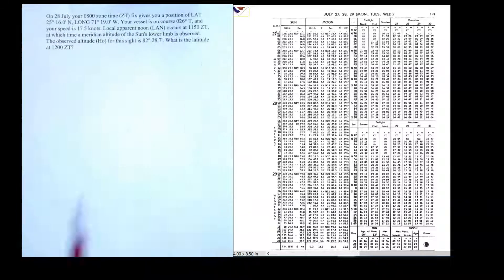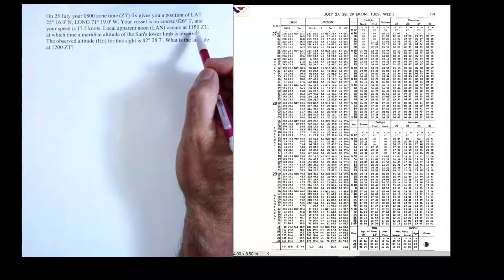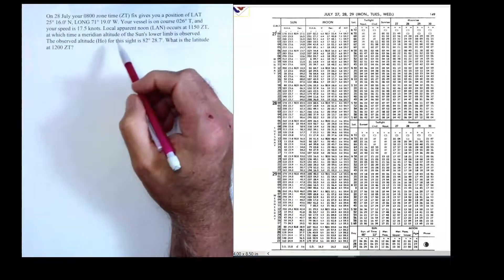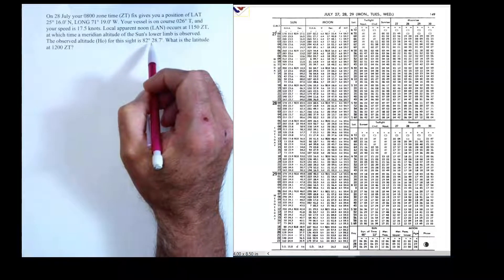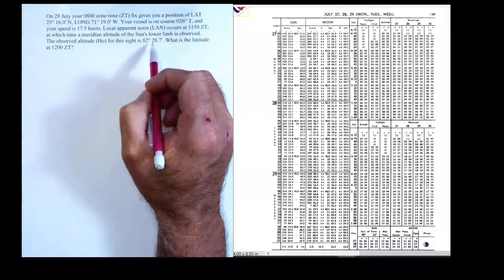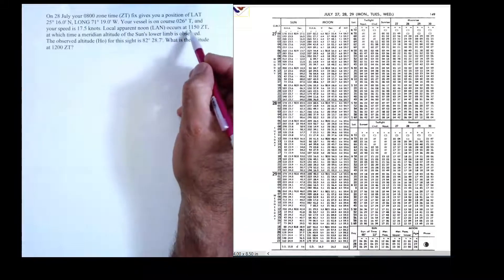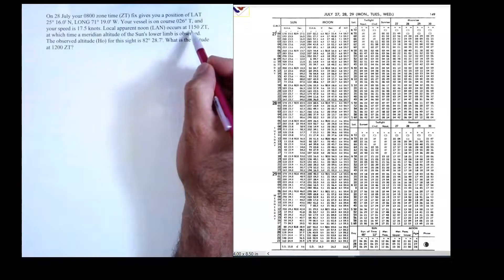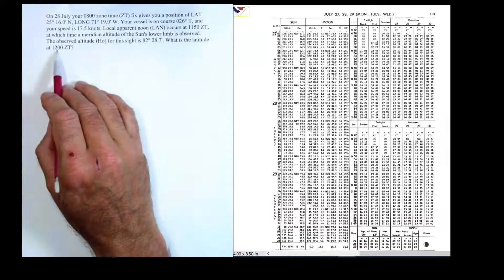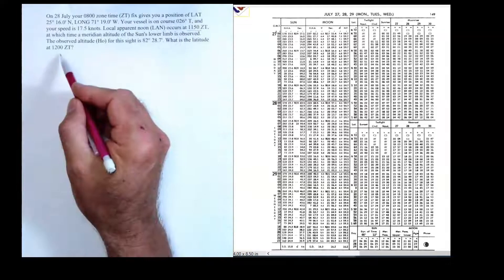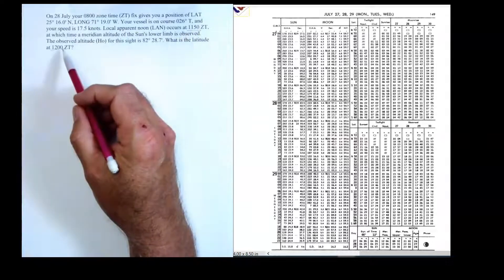So local apparent noon, they tell us it happens at 1150, and they give us an HO, which we're going to have to track from ZD by subtracting from 90 to get ZD. But this is the tricky thing - you got to be careful for this. We're going to calculate latitude at LAN, but that's not the latitude that they're asking us for. They're asking us for the latitude at noon, so this is a tricky little thing. We're going to have to do a small advance at the end to get our latitude at noon.